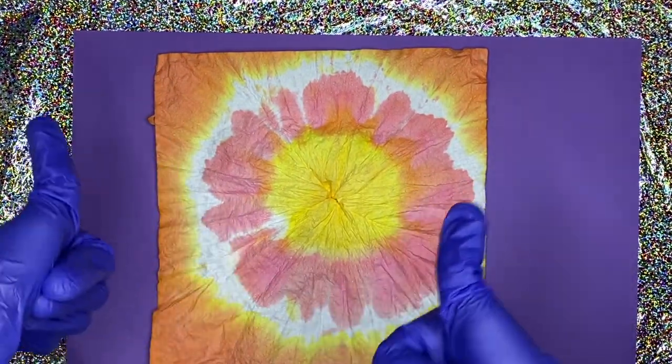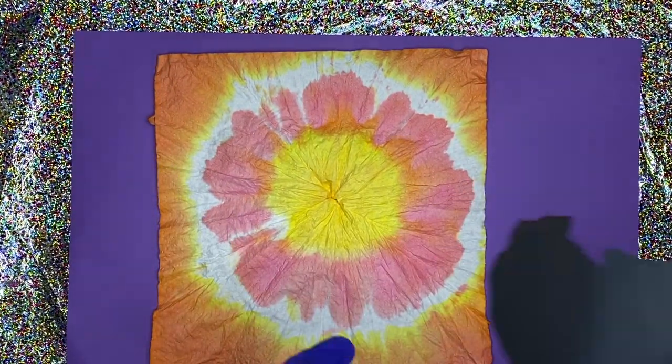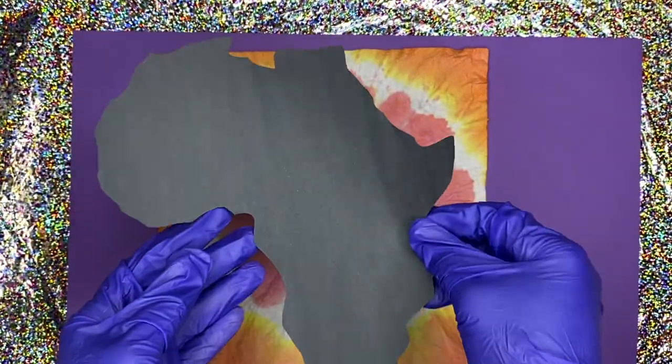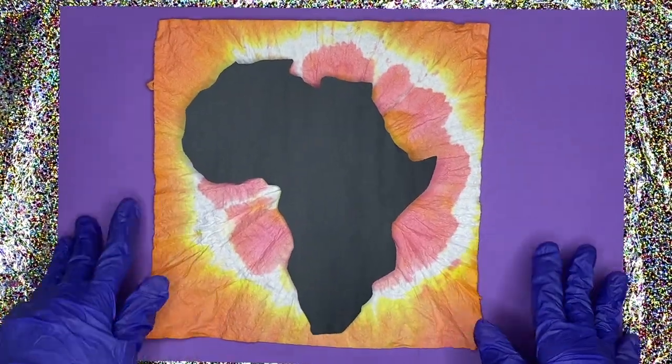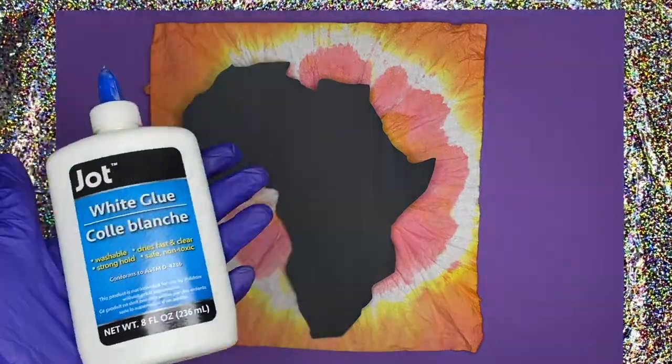Now, after you finish, you will have your silhouette that looks like this. And all you need to do is glue it on top of your tie-dye fabric that we made in the first craft.